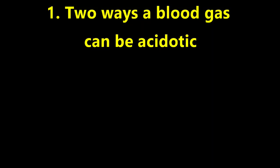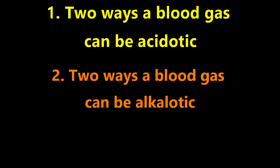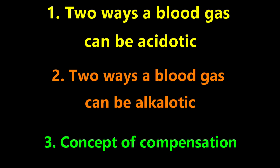Today we are going to go through three main concepts. The first is the two ways in which a gas can be acidotic. The second is the two ways in which a gas can be alkalotic. And the third is the whole concept of compensation by the body to try to get that pH back to neutral. I think this really confuses a lot of people, but it's a very straightforward concept. I promise you by the end of this video, you will understand it.